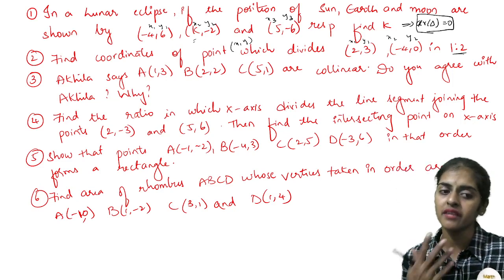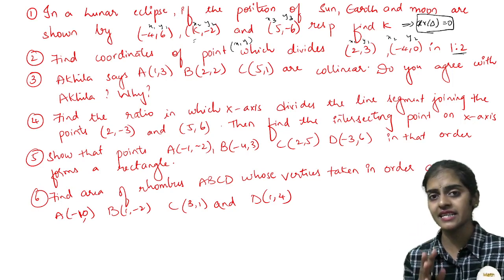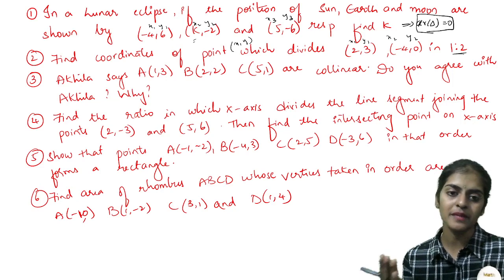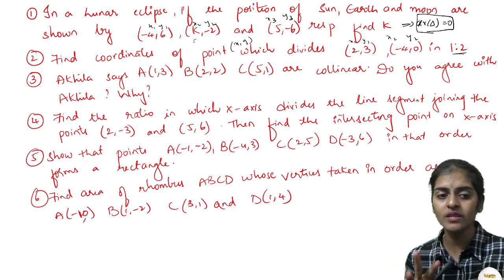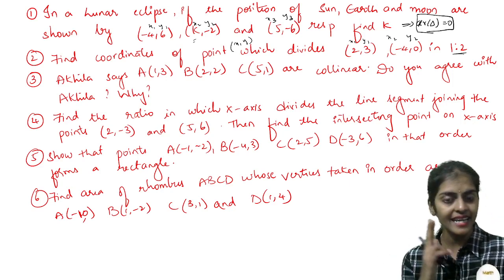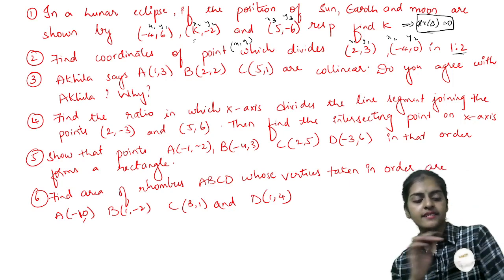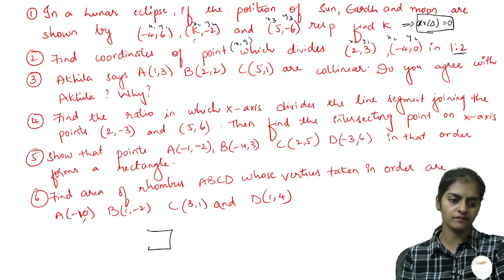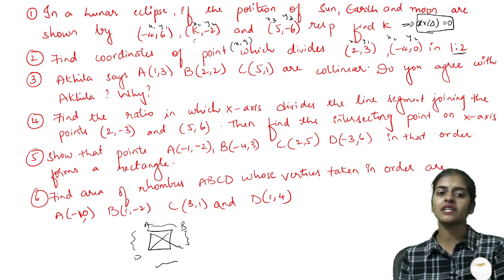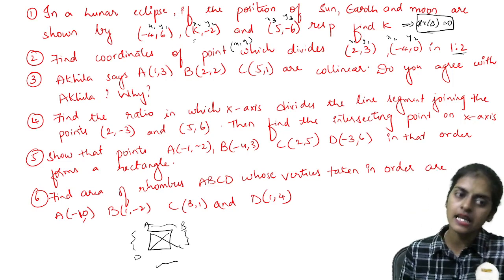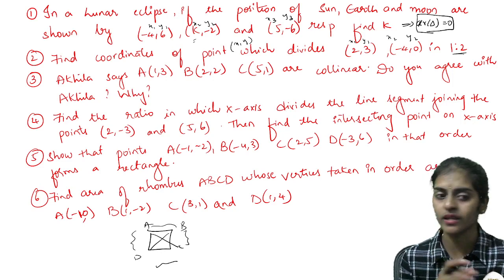Then they will ask you to show that the given points form a rectangle or they form a parallelogram or they form a square. In these cases, if it is a rectangle, opposite sides will be equal and diagonals will be equal. So you will find using distance formula AB, BC, CD, DA. Find all the sides and you will see that AB will be equal to CD, opposite sides, and AD equal to BC. And also the diagonals are also equal since it is a rectangle. So if you can prove these three things, then you will conclude that this is a rectangle. Similar model question they may ask you for square. Then all sides are equal and diagonals equal. It will be a square.